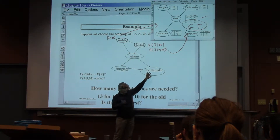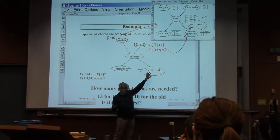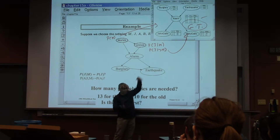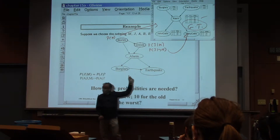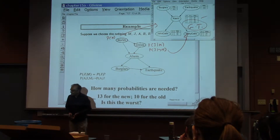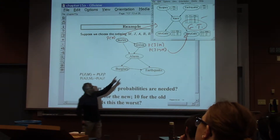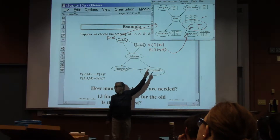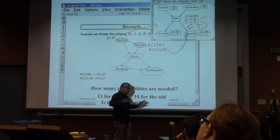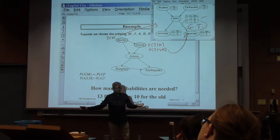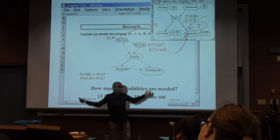If you think I'm just talking to myself as a madman, then you have not understood anything about this network. You should be able to understand my monologue here, looking at this network and telling you how many problems it is. So this required 13 separately assessed numbers, and that one only required 10 separately assessed numbers. But it turns out both of them, if the experts know what they're talking about, both of them correspond to the same final joint distribution.